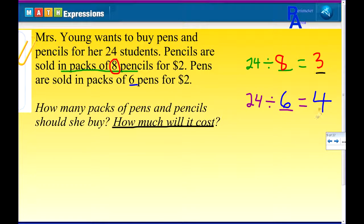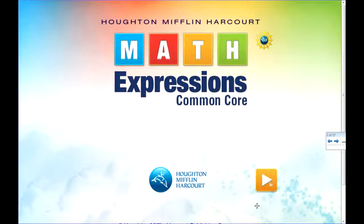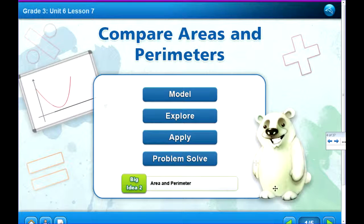Now there's the second part of this: how much will it cost? Well if she bought 3 packs and 4 packs, can't we just add those up? 3 plus 4 equals 7 times 2 equals $14. So Mrs. Young spent $14 to get everybody a new pen and pencil.